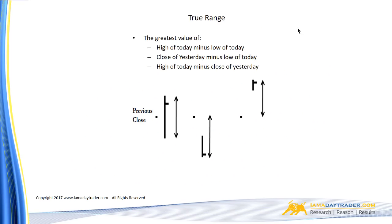We start with true range. This is the highest value of either: the high of today minus the low of today (a normal range), or the close of yesterday minus the low of today, or the high of today minus the close of yesterday. You have these three potential calculations, and whichever is highest will be used for true range.